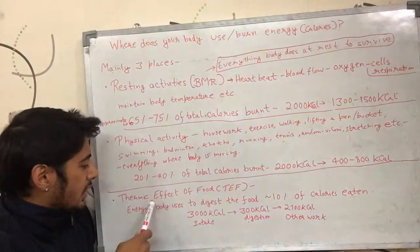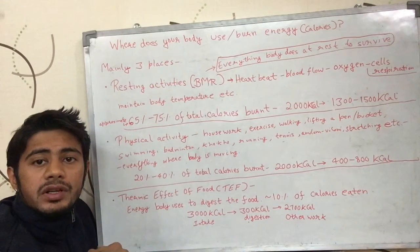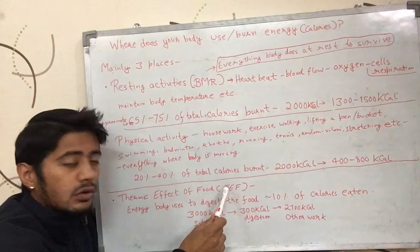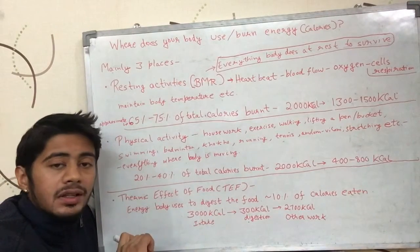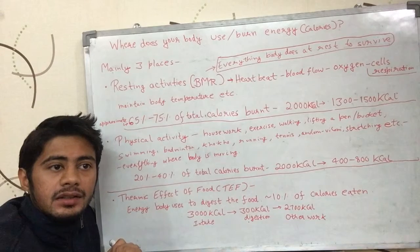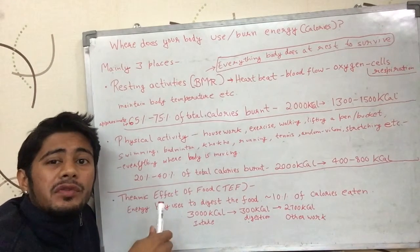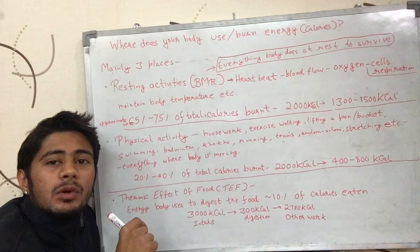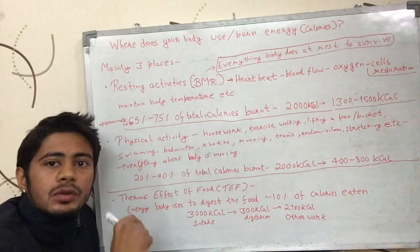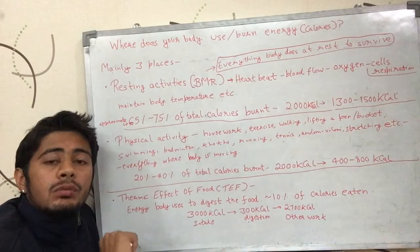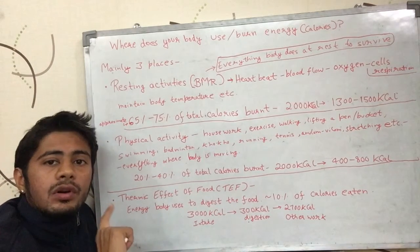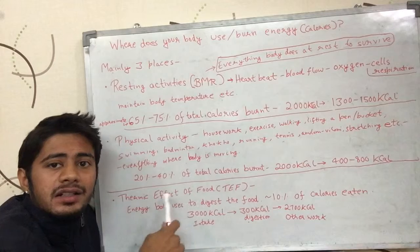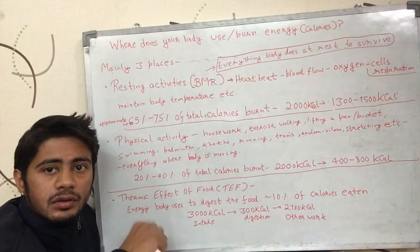The third place where your body needs energy is in digesting food. This is called the thermic effect of food, or TEF for short. It is about 10 percent of the calories you eat. So if you ate 3000 calories, approximately 300 calories will be used to digest those 3000 calories, and your body will be left with 2700 calories for the rest of its work. So around 10 percent of the calories you eat are used for digestion itself.